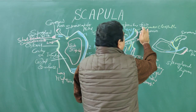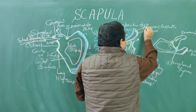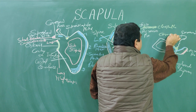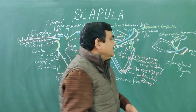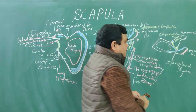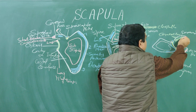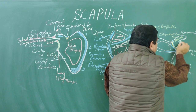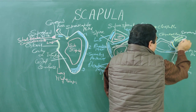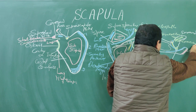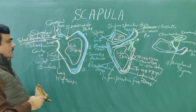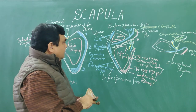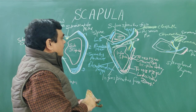This ligament is the acromioclavicular ligament, and here is the coracoclavicular ligament. The coracoclavicular ligament has two parts.